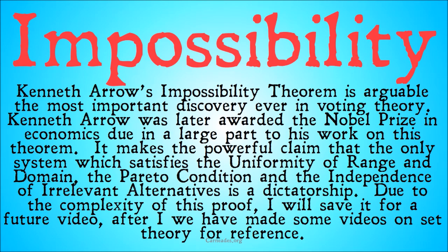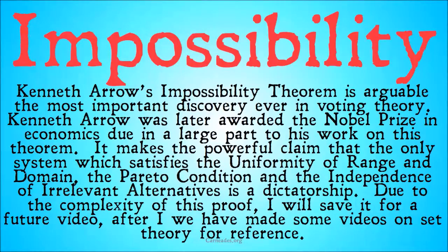Now let's talk about Kenneth Arrow's Impossibility Theorem — arguably the most important discovery ever in voting theory. Kenneth Arrow was later awarded the Nobel Prize in Economics, due in large part to his work on this theorem. It makes the powerful claim that the only system which satisfies unrestricted range and domain, the Pareto condition, and independence of irrelevant alternatives is a dictatorship. Due to the complexity of the proof, I will save it for a future video after making some more videos on set theory.